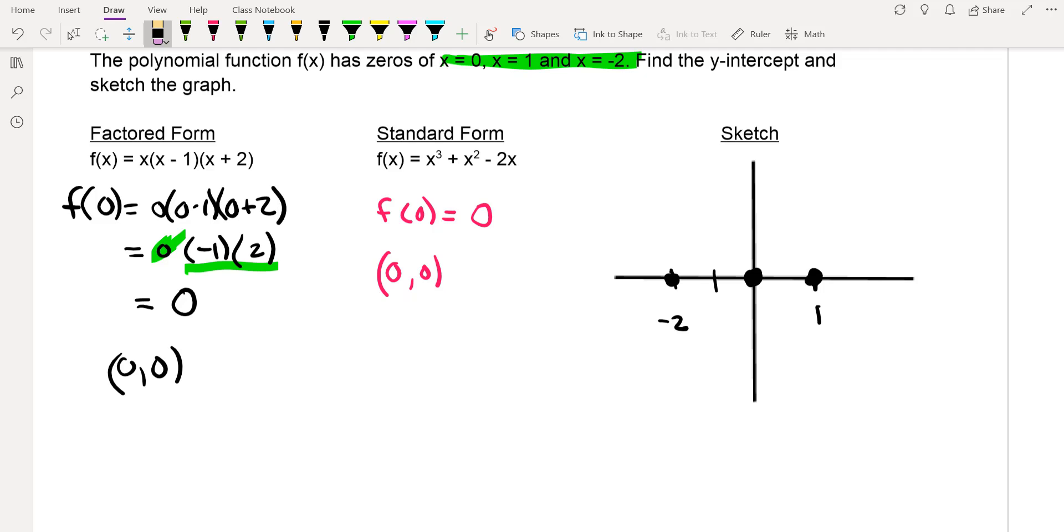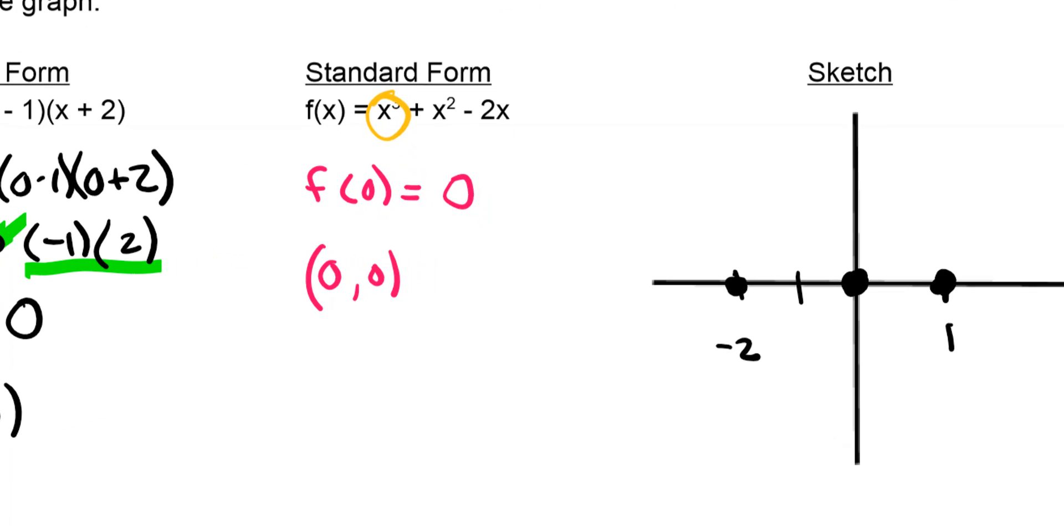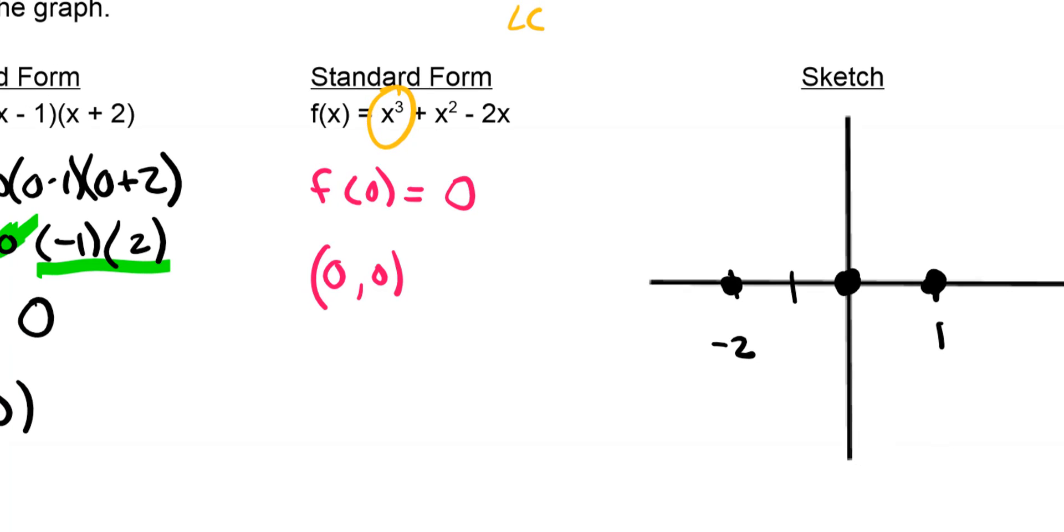Then let's go ahead and finish off our sketch. So again, first thing we're going to do is look at the end behavior. And when I look at my leading coefficient of x cubed, I'm going to look at the leading coefficient and the degree. So the leading coefficient is positive, and the degree is an odd degree function. So that means the ends are going to be similar to what a line would look like.